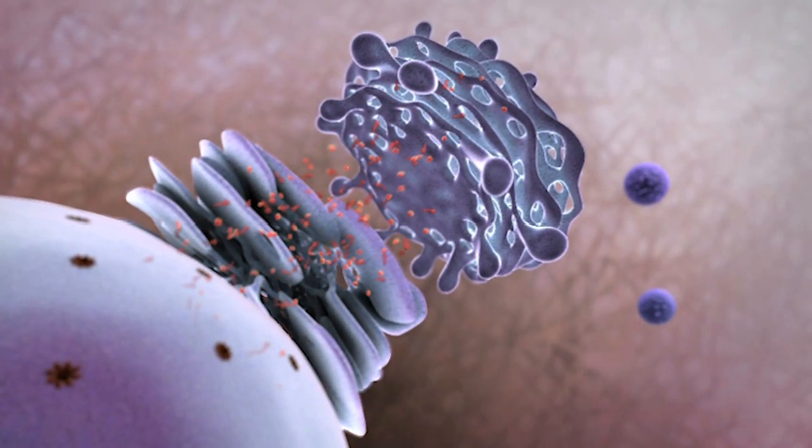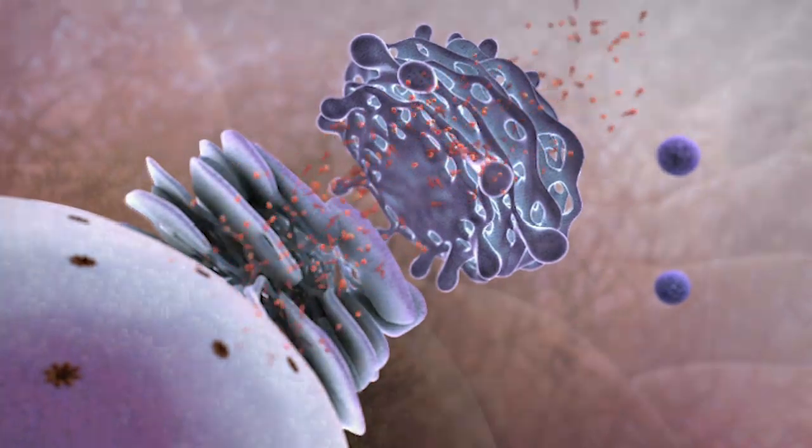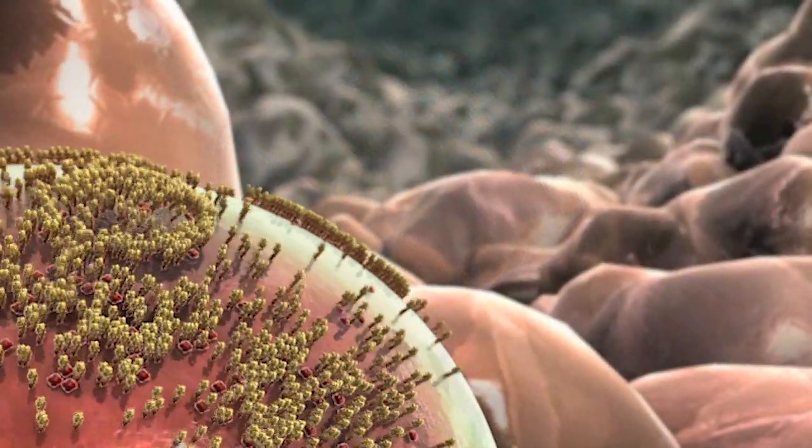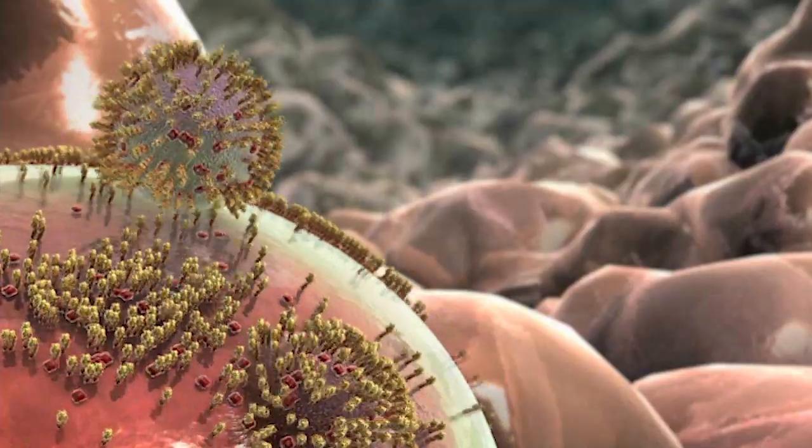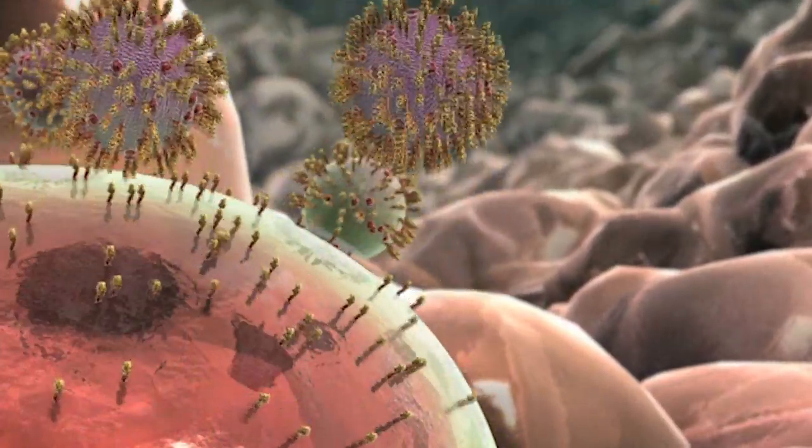Viral surface proteins are made and processed in the cytoplasm and also travel to the cell surface where they combine with the encapsulated nucleoproteins to form progeny viruses which depart from the cell by budding. The virion now goes on to infect other cells.